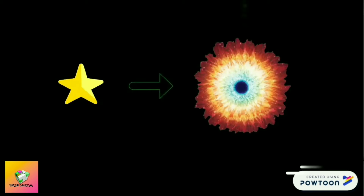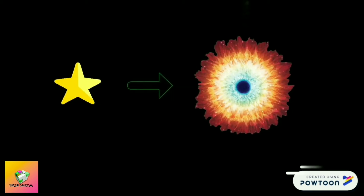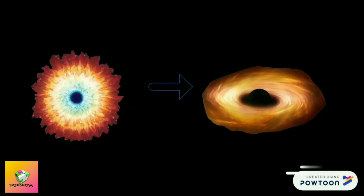The leftover of such an event produces a neutron star — the collapsed core of the original star. Or, if there is a sufficient amount of mass, it will go on to create a black hole. Black holes are their own separate topic, so I will not go further since this episode is about stars only.